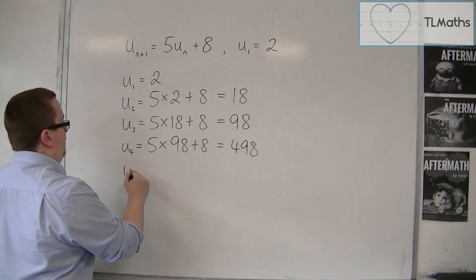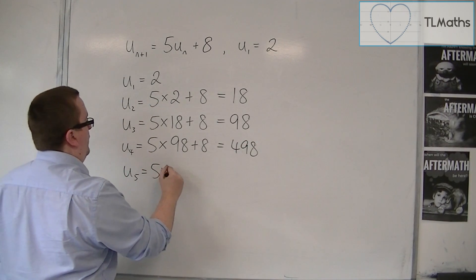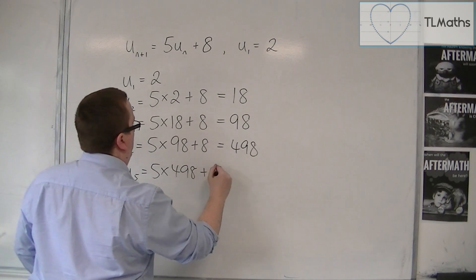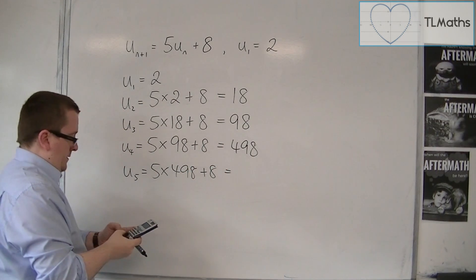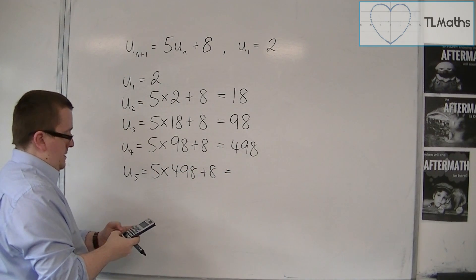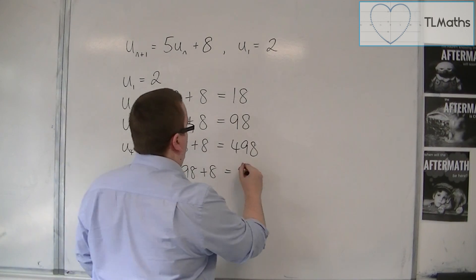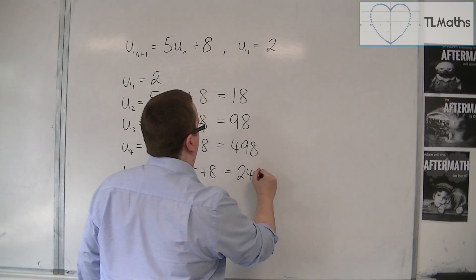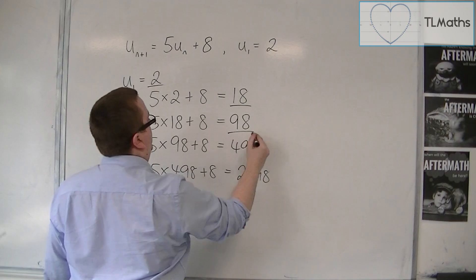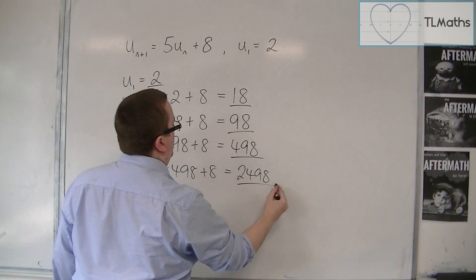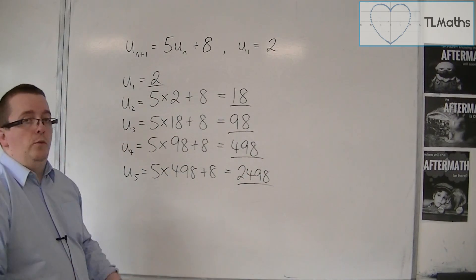And then finally u5 is 5 times 498 plus 8, so we get 2498. And these are the first five terms of this sequence.